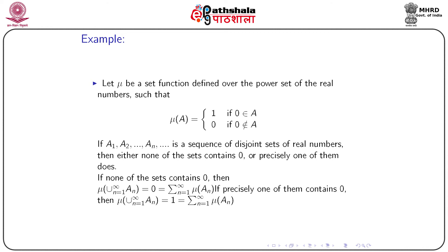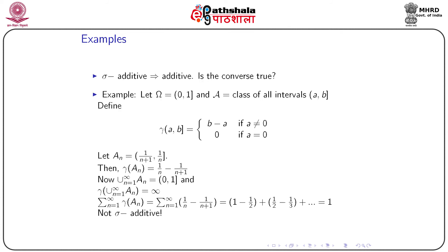There is a question: if a set function is sigma additive, can it be additive also? The answer is trivially true, because whenever we consider sigma additivity we are taking countable unions, so if any result is true for countable unions it will be true for finite unions too. Whether the converse is true is the basic question — we will give a counter-example to show that even if it is additive, it may not be sigma additive.